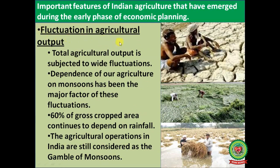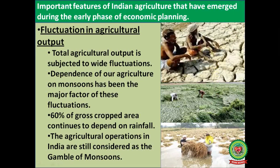Fluctuation in agricultural output: total agricultural output is subject to wide fluctuations. Dependence on monsoon has been the major factor behind these fluctuations. 60 percent of gross cropped area continues to depend on rainfall. Agricultural operations in India are still considered a gamble of the monsoon, as drought conditions and flooding damage crops.